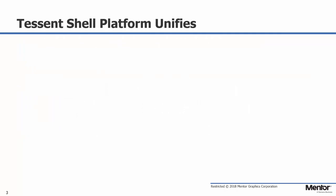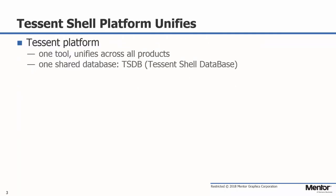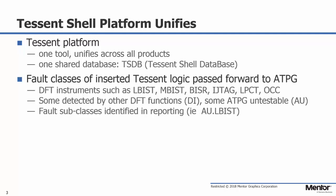The solution we provide is the Tessin Shell, which unifies all these separate pieces. Think of Tessin Shell as a platform — a single tool that enables you to launch whatever DFT step is needed in your flow. One of the key unifying features is the TSDB, or Tessin Shell Database. Tessin is able to store all the information associated with each DFT step into the TSDB and automatically retrieve that information at a later stage in the flow. For DFT instruments inserted by Tessin — such as LBIST, MBIST, built-in self-repair, IJTAG, LPCT, and OCCs — we can automatically categorize some faults as Detected by Implication, or DI, in a statistics report and forward that information to the ATPG step for more accurate results.